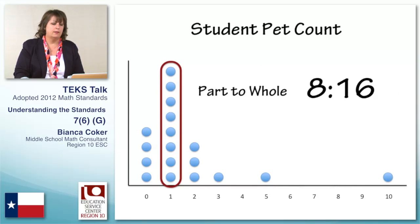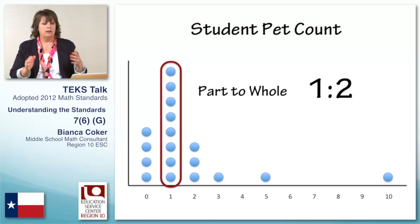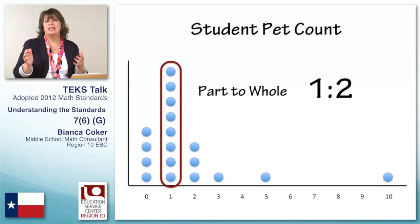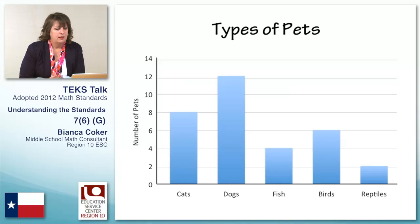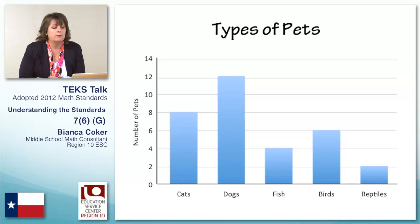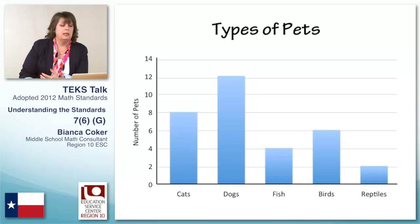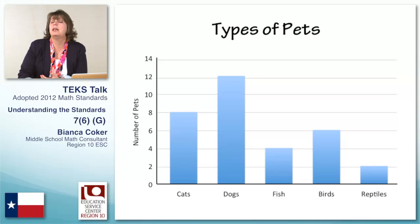Let's look at another graph — a bar graph. This is a bar graph of the kinds of pets they have. We have eight students who have cats, and we have 12 students who have dogs, and we have four students who have fish. When we look at this kind of graph, we can tell the frequency or the amount by looking at the vertical axis, and our label or category is on the horizontal axis. The height of the bar indicates how many.